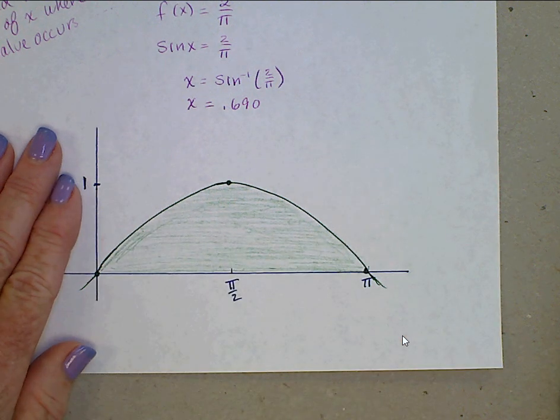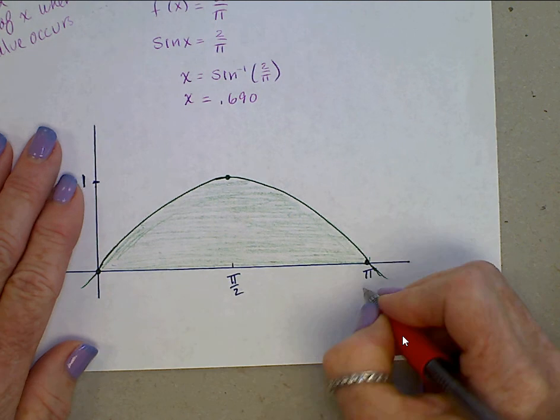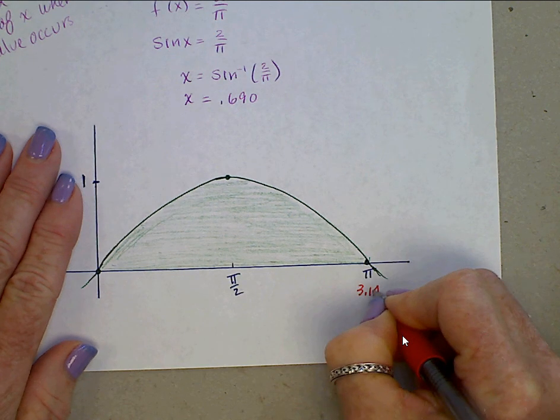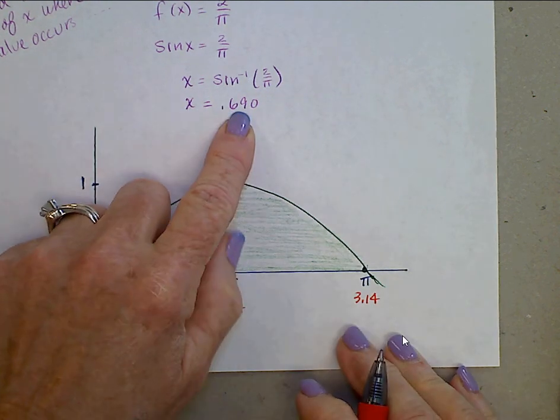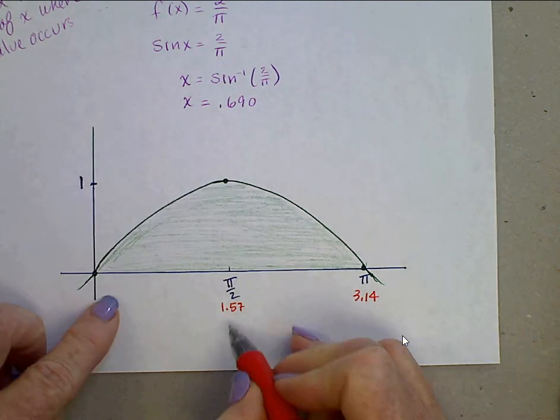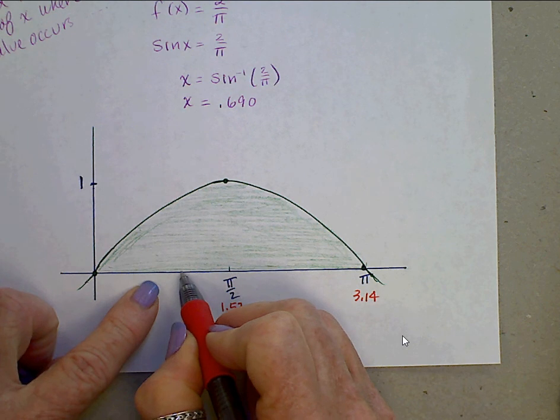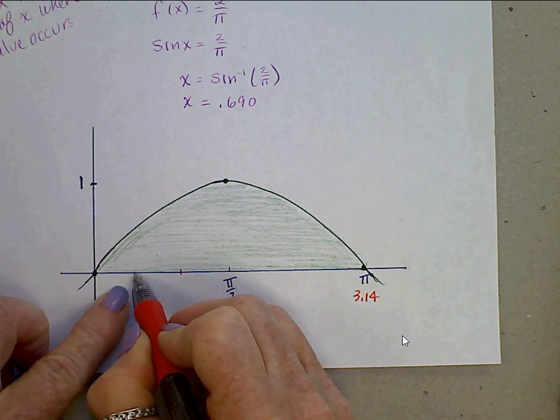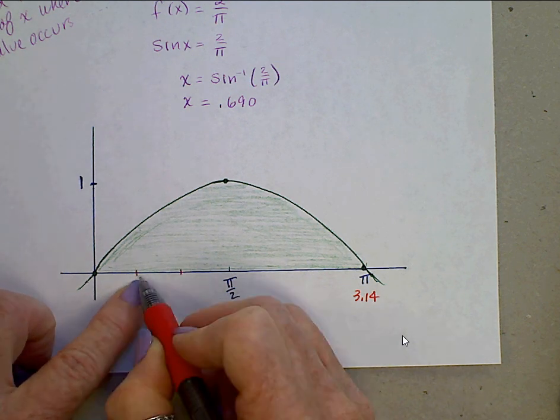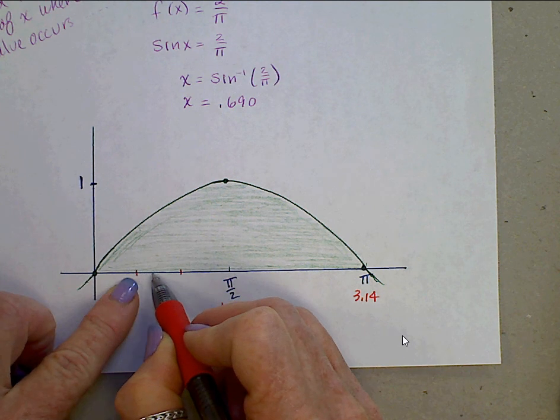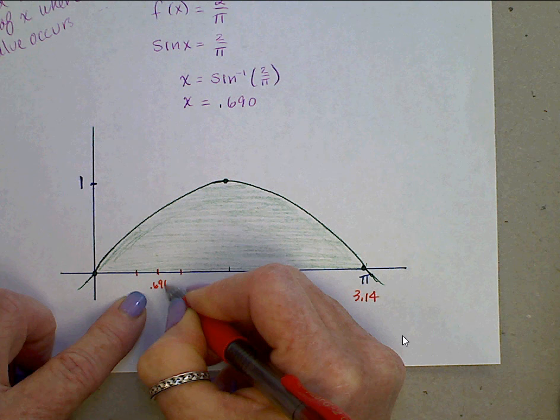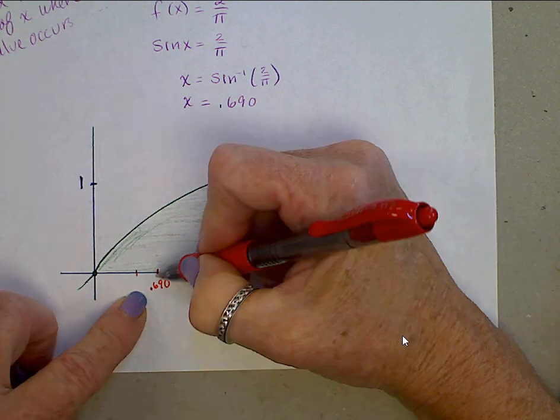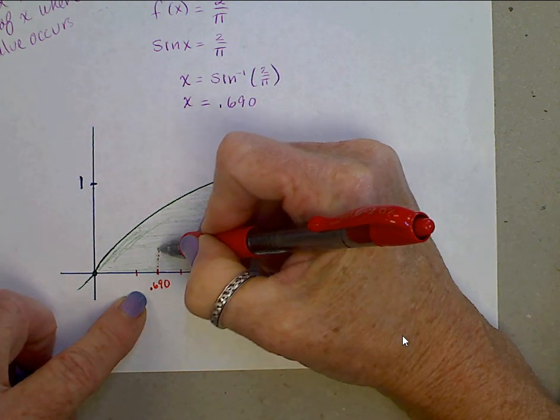Just to refresh your memory, pi about 3.14, pi over 2 about 1.57. x is at 0.690. 1.57, which means, like, 1 is about there, 0.5 is about there, 0.5, 0.6, 0.7, so maybe right there is 0.690. Line that up to where that hits the function.